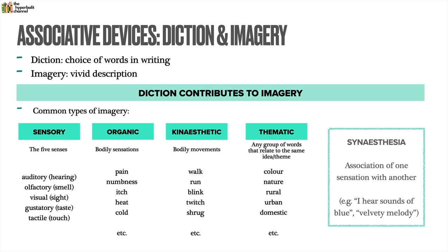One bonus, slightly more advanced term is synesthesia — the association of one sensation with another, essentially mixing your sensory descriptions and matching them in a way that literally wouldn't make sense. For example, 'I hear sounds of blue' is odd, because to identify something as blue you need to see it, yet here we're referring to the auditory faculty. Or 'velvety melody' — velvety is a tactile description, but melody is something we can only hear, so here we're mingling the tactile and auditory faculties. Synesthesia makes descriptions a lot more vivid and memorable, and we tend to see it in quite a lot of heavily descriptive passages.